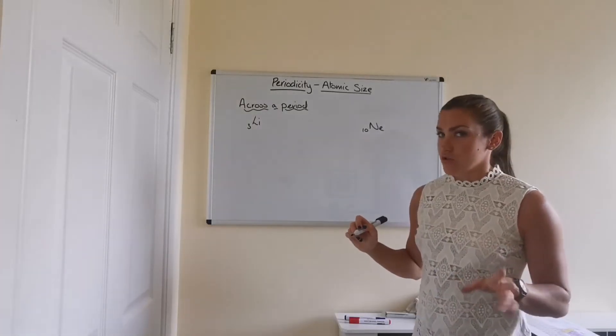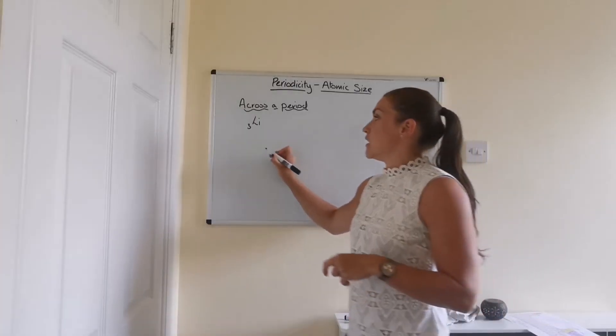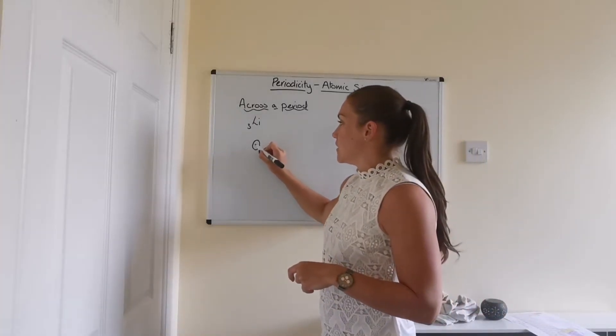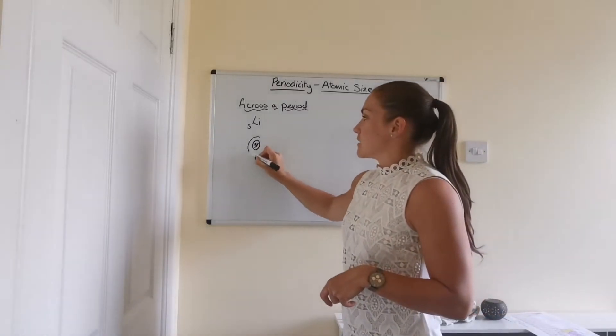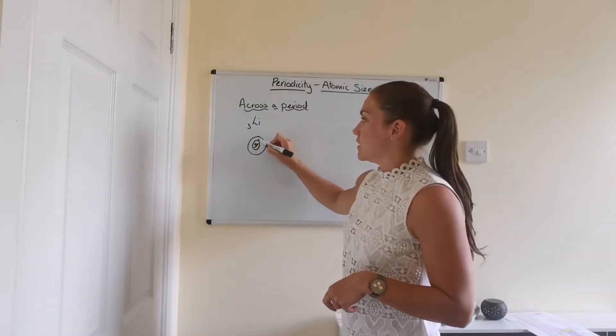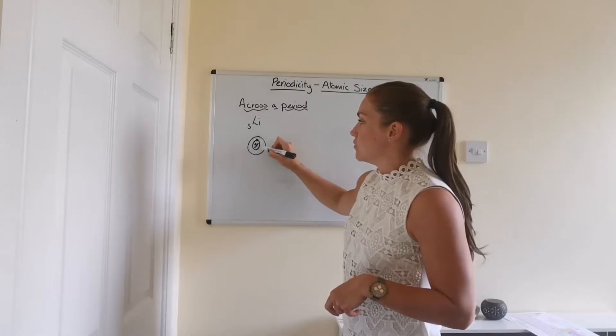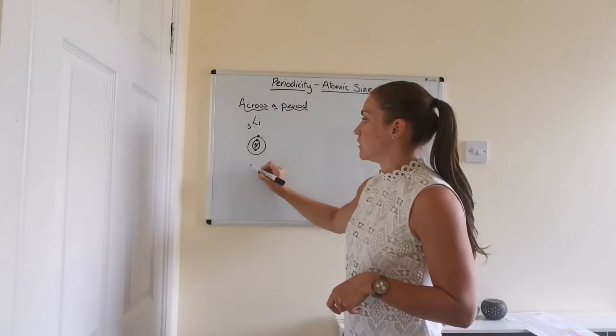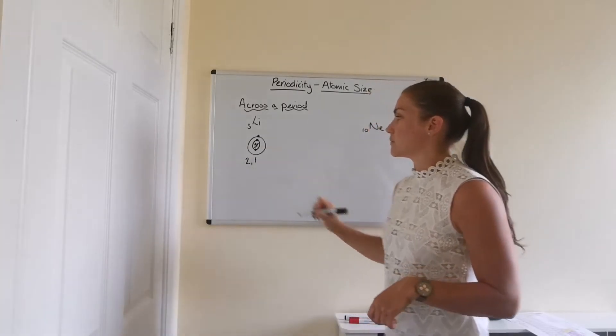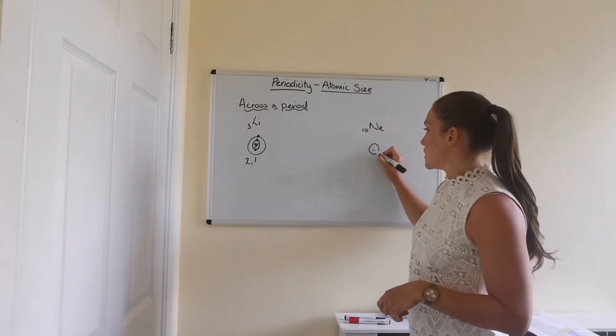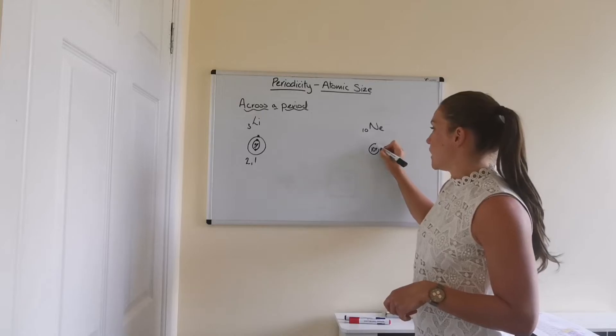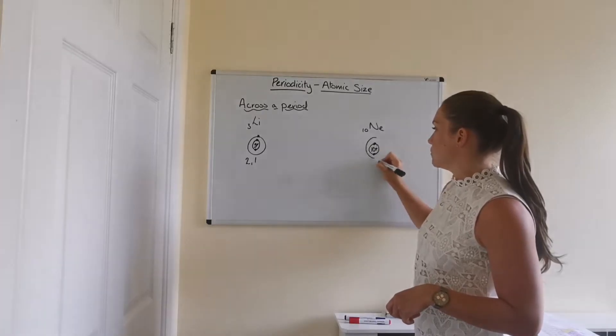So we're not really interested in the neutrons, only the protons and electrons. So lithium has three protons in the nucleus, so that's three positive in the middle. And then in its electron shells, it's got an electron arrangement of 2, 1. Right, so now if we draw neon, it's got a 10 positive charge in the middle, and its electron arrangement is 2, 8.